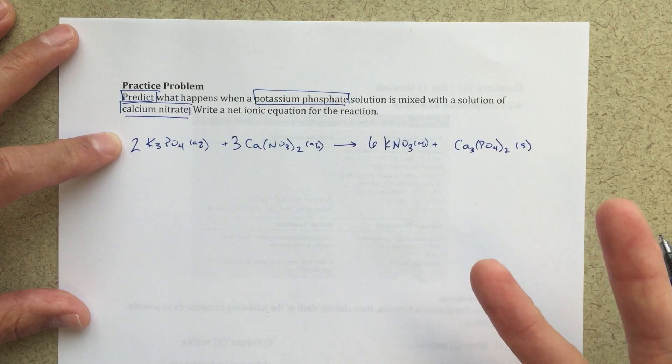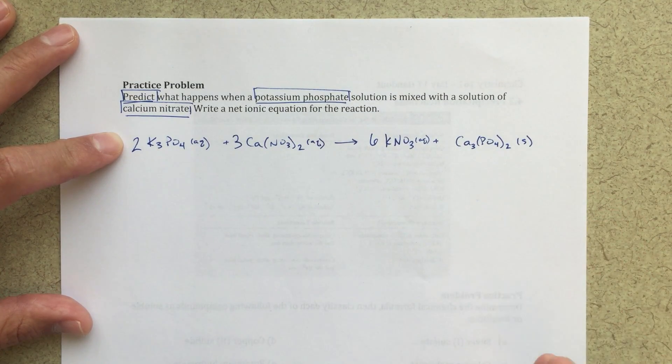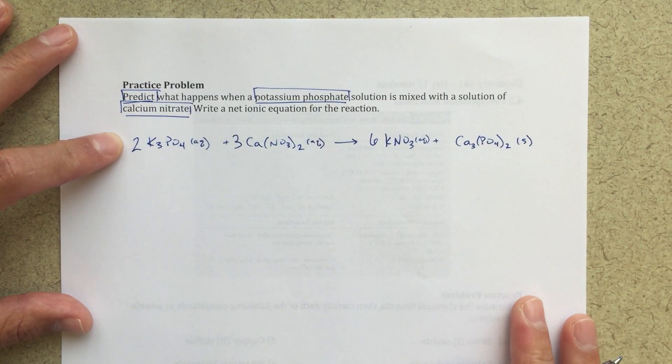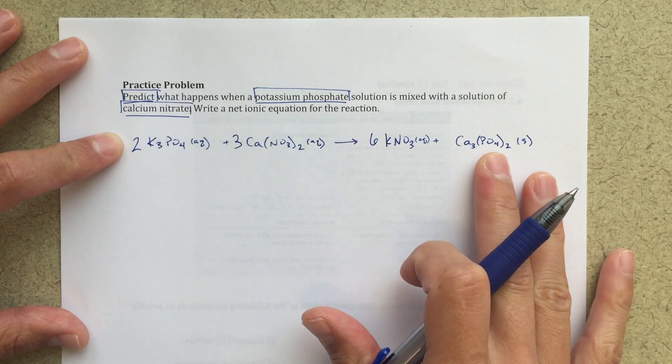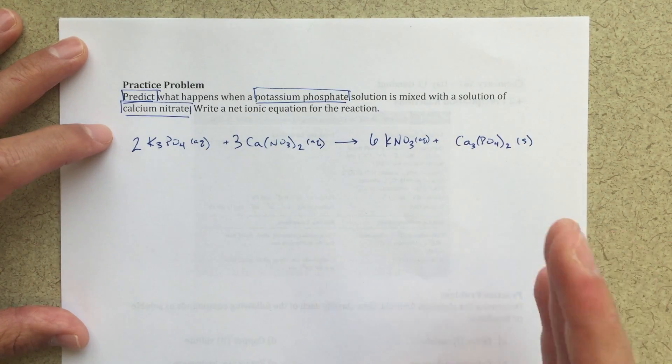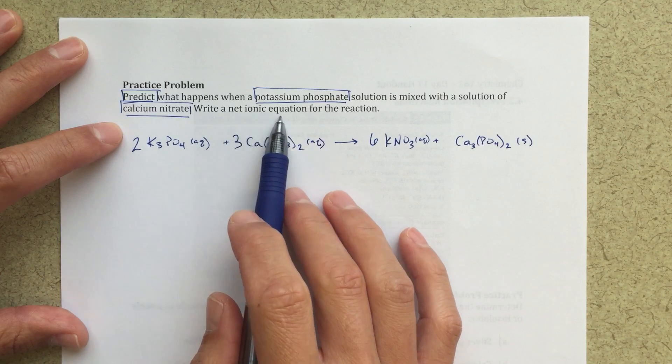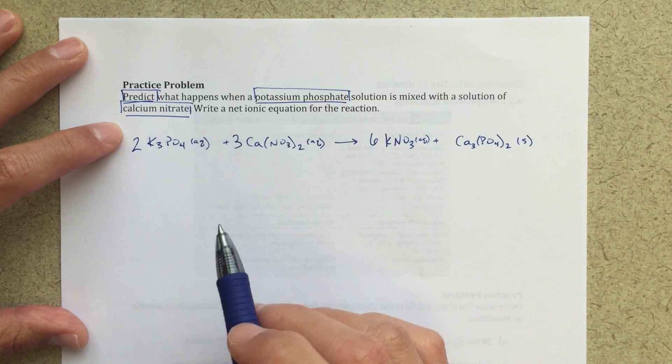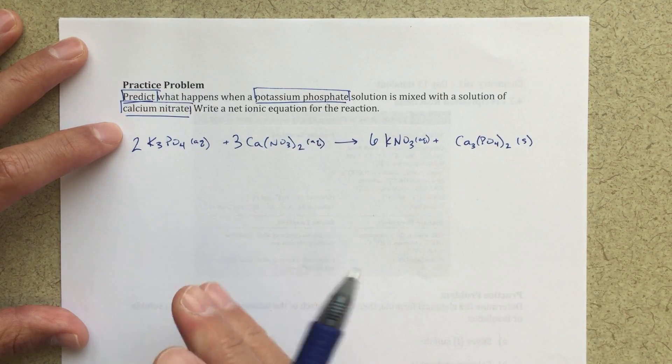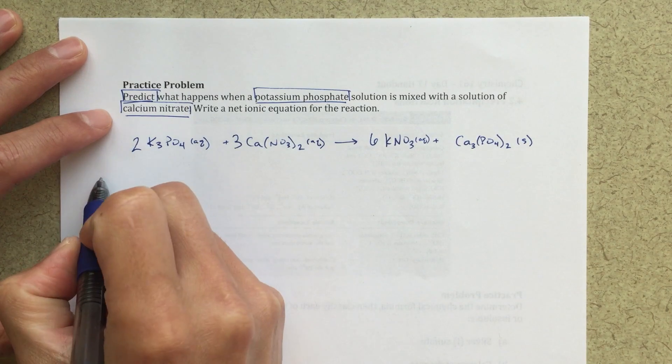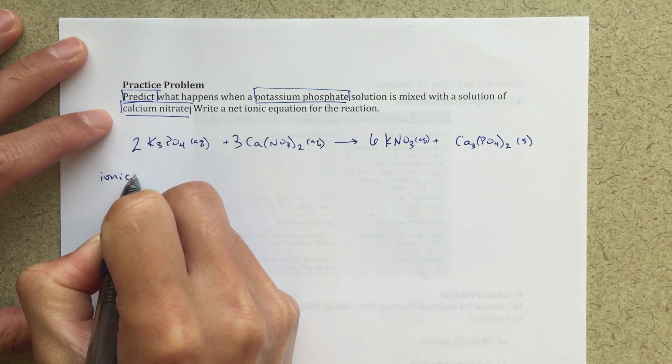If you need help balancing the chemical equation, I've got some other videos, or you can just ask. Now I've got my balanced molecular equation. So this is step one in this problem, and my end goal is to write a net ionic equation for the reaction. So some people can jump right to the net ionic equation. That's totally fine. I'm going to show the full ionic equation first.